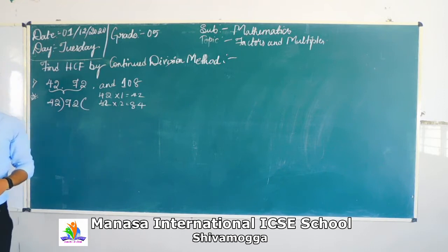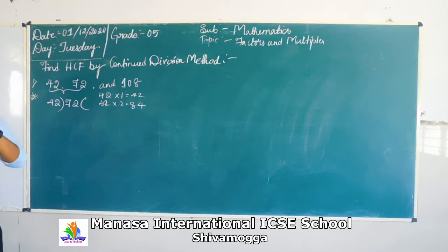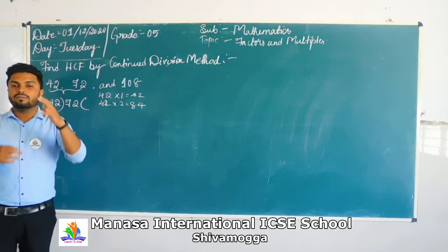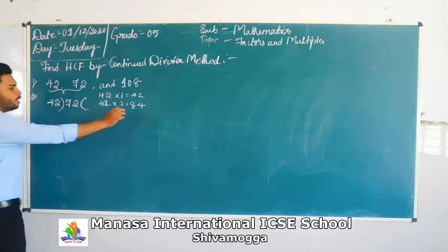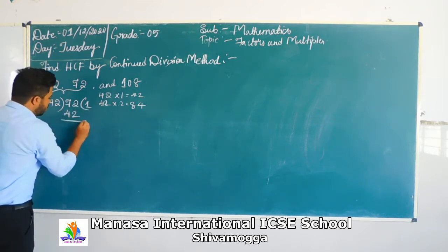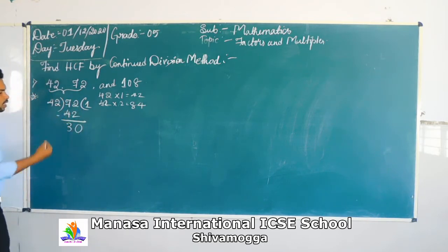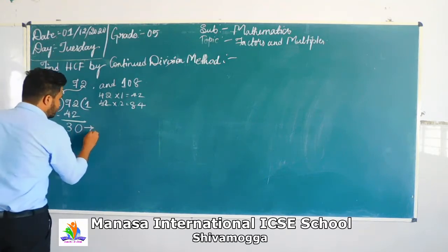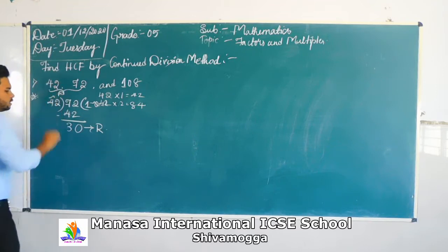72 is the smaller number, so we take 42 ones are 42. Now subtraction: 2 minus 2 is 0, and 7 minus 4 is 3. So you got remainder 30. Now you have the remainder and the divisor for the next step.